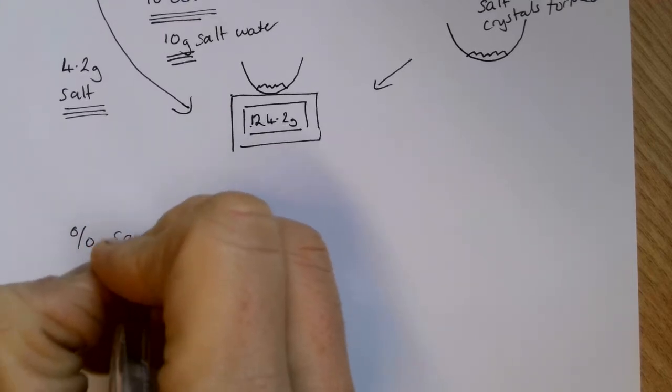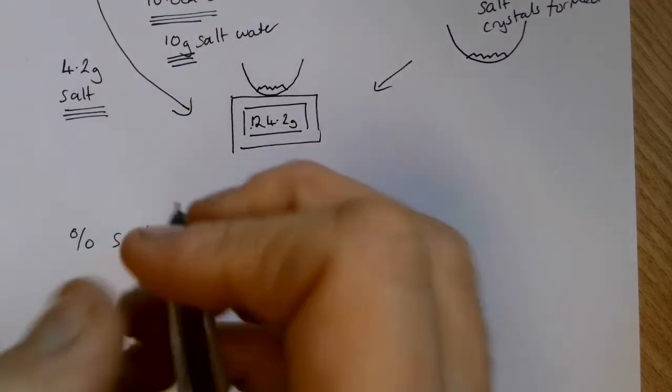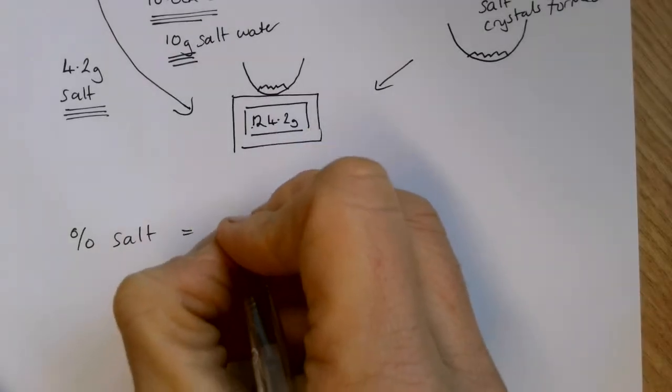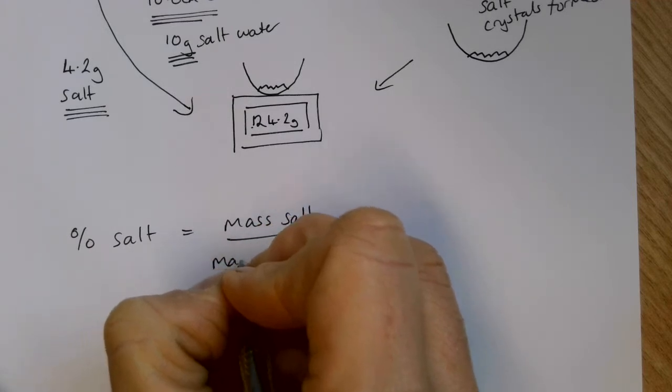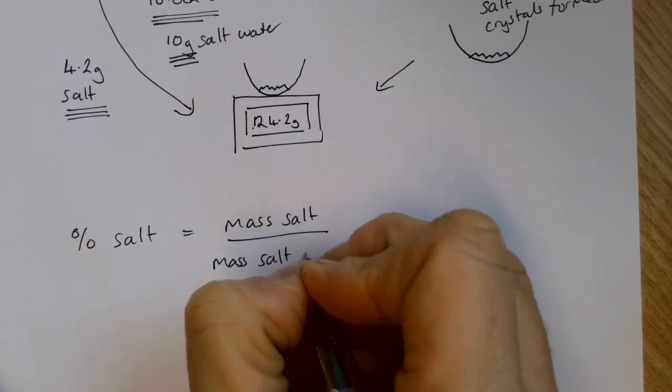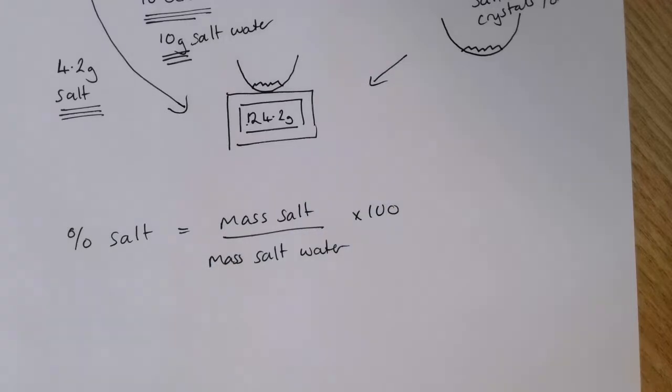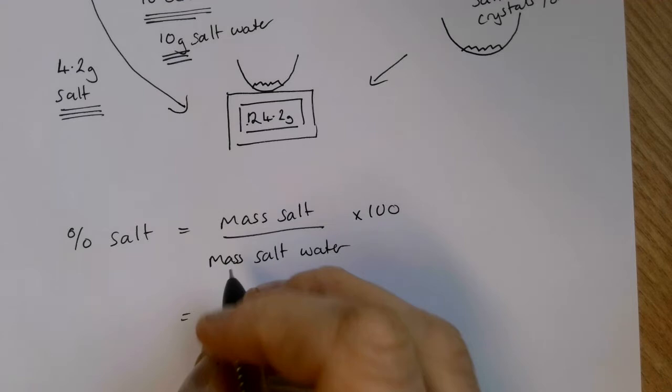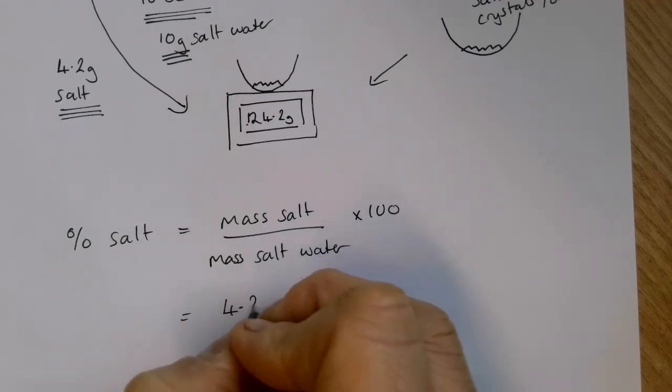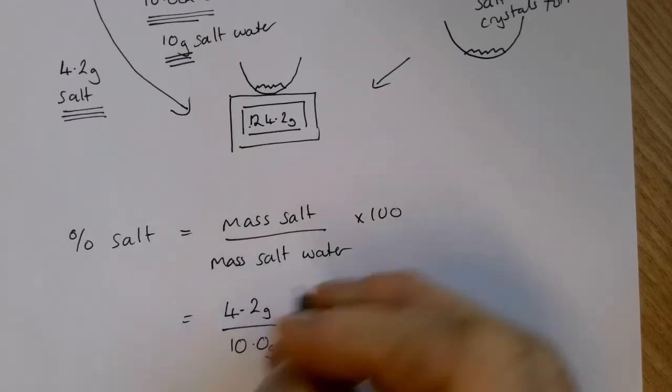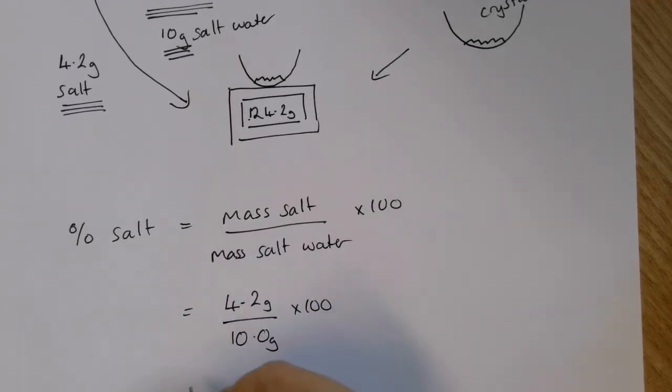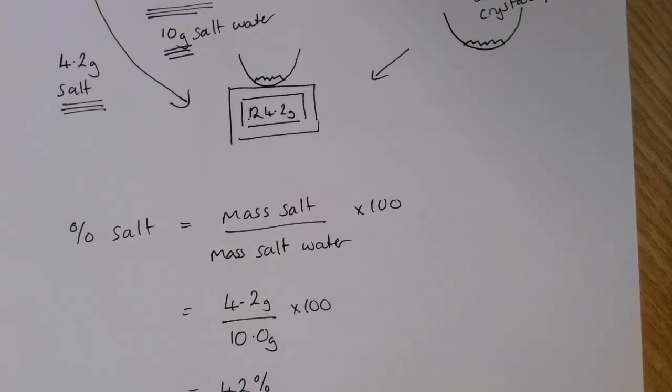The percentage of salt in our sample is going to be equal to the mass of the salt divided by the mass of the salt water, multiplied by 100 to give it to us as a percentage. If we take the numbers that we've had in our thought experiment, which is 4.2 grams divided by 10.0 grams multiplied by 100, this gives us an answer of 42 percent salt.